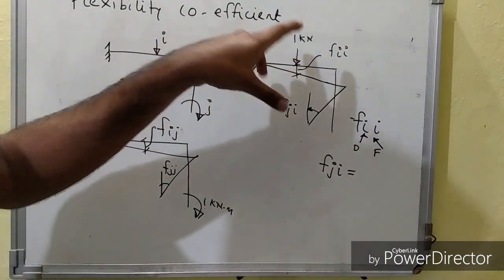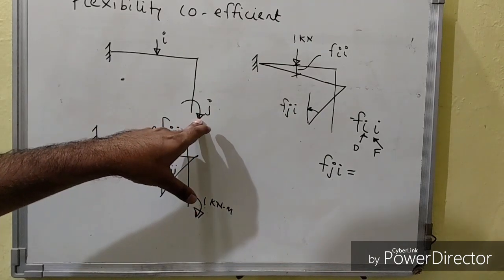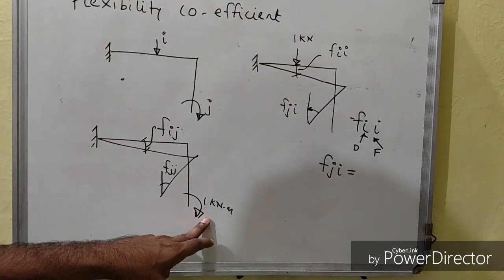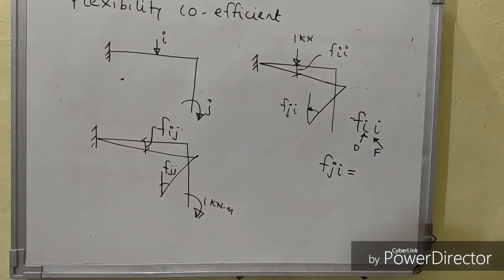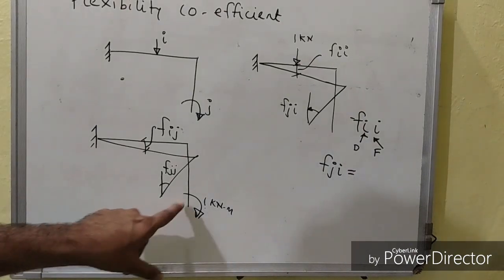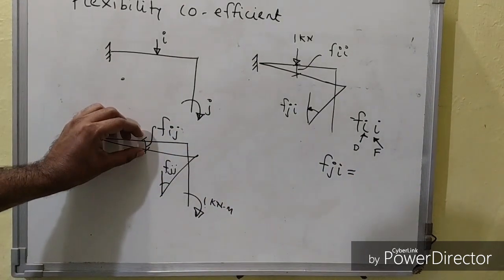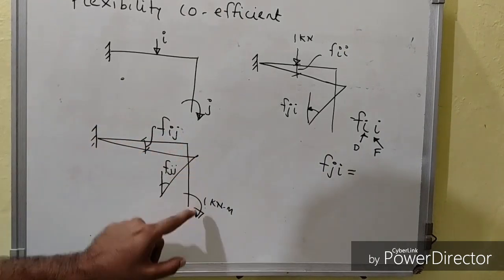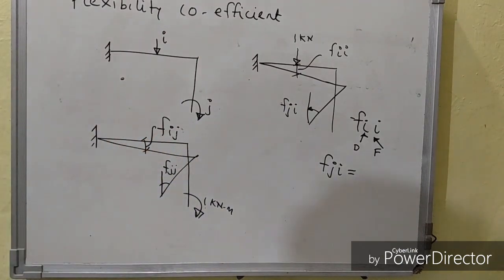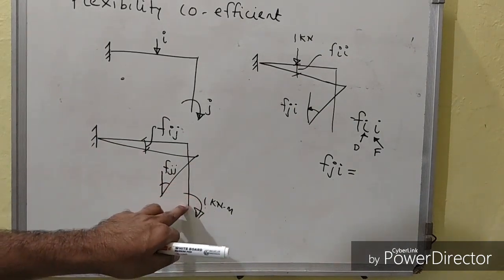Next, since coordinate J represents a moment component, we apply a unit moment at coordinate J. The structure will again be displaced. The deflection at coordinate I due to this unit moment at J is called F_IJ. The rotation at coordinate J due to the unit moment at coordinate J is called F_JJ.